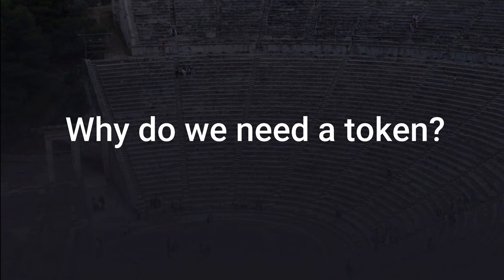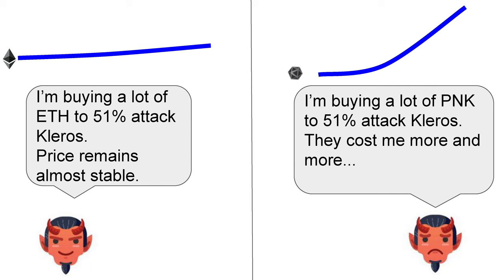Since we're in token engineering, we can ask: why do we need a token? What if we used ETH instead of PNK? If someone tried to 51%-attack Kleros using ETH, it would be easier because the PNK market is much smaller than ETH. Trying to buy 51% of PNK moves its price a lot; buying the equivalent share of ETH used in Kleros barely affects ETH's price.